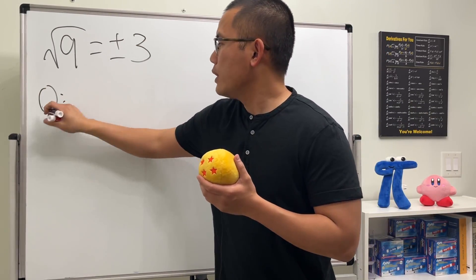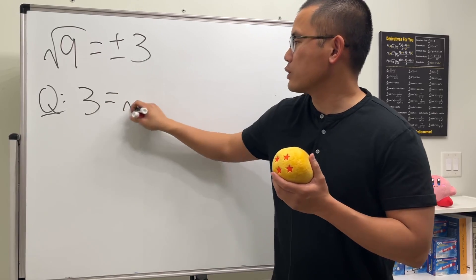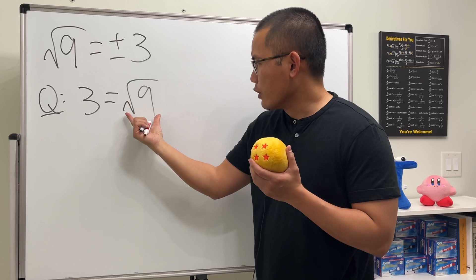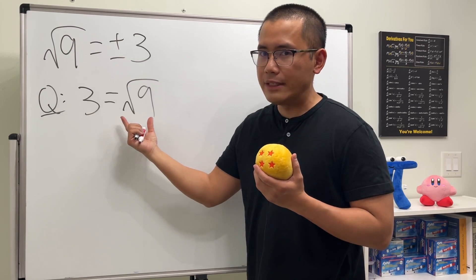Start with three, and that's equal to square root of nine. Of course, this is equal. Now, because we have square root of nine right here, let's use the negative three from here.